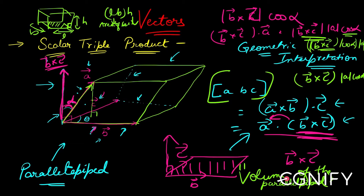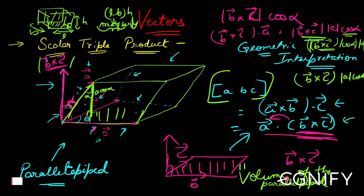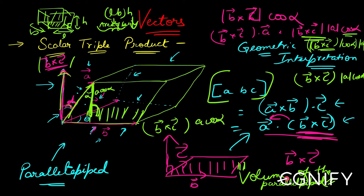The height is not b cross c times cos(alpha) — it is actually a·cos(alpha). If alpha is the angle shown, then a·cos(alpha) is the altitude, and I multiply that with the base area which is mod(b cross c). So base area times altitude gives the volume of the parallelepiped. All of this can be written as b cross c dot a.